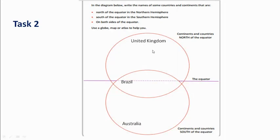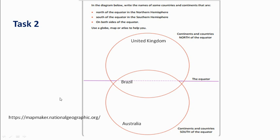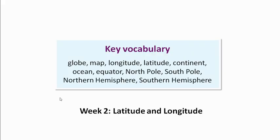A country on the equator is Brazil. I want you to do at least five countries in the Northern Hemisphere section, five in the Southern Hemisphere, and five on the equator. You can use a map or globe at home, or use the National Geographic website — I'll put a link on the school's geography page. It's free. Here's a reminder of the new vocabulary for this topic — I want you to learn all these words and be able to spell them correctly. Next week we'll be looking at how we divide the world using horizontal and vertical lines called latitude and longitude.